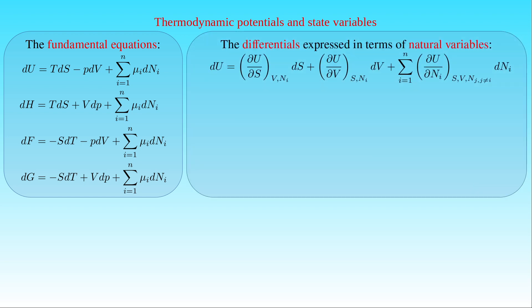The differential of the internal energy U is equal to the partial derivative of U with respect to S at constant V and Nᵢ, times dS, plus the partial derivative of U with respect to V at constant S and Nᵢ, times dV, plus the sum of the partial derivative of U with respect to Nᵢ at constant S, V, and Nⱼ where j ≠ i, times dNᵢ. The index i runs through all the species in the system.